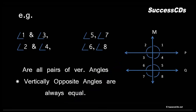Taking the example of parallel lines P and Q with transversal M: angles 1 and 3 are formed by lines M and P, making them vertically opposite angles. Similarly, angles 2 and 4 are vertically opposite angles. For lines M and Q, angles 5 and 7, and angles 6 and 8, are also pairs of vertically opposite angles. Remember, vertically opposite angles are always equal.